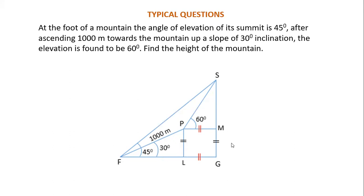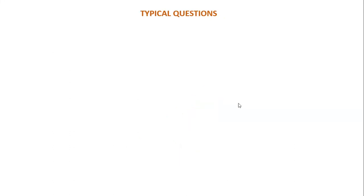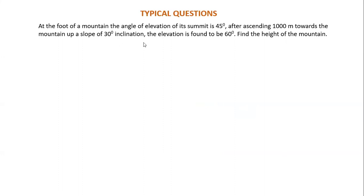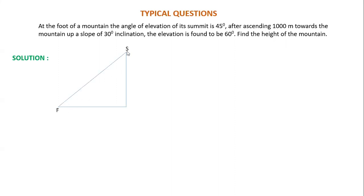I will explain the figure and how it is drawn. This is the ground level. This is the foot of the mountain, and this is the summit — the peak of the mountain. From this point, a man looks at the summit of the mountain. He measures the vertical height and measures the angle of elevation as 45 degrees.